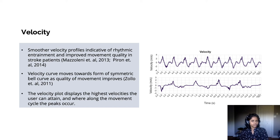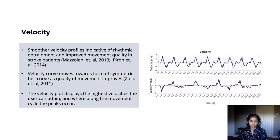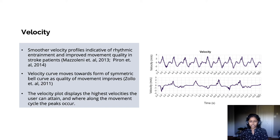We include the visualization of the velocity curve as smoother velocity profiles are indicative of entrainment and better quality of movement. It has also been shown that as quality of movement improves, the velocity curve moves towards the form of a symmetric bell curve. The velocity visualization displays the highest velocities the user can attain and where along the movement cycle the peaks occur. In these cases, the person in the upper graph is constantly in motion, while in the lower graph the user's hand is mostly stationary, aside from sudden bursts of movement. The user in the top graph also manages to attain a higher peak velocity.